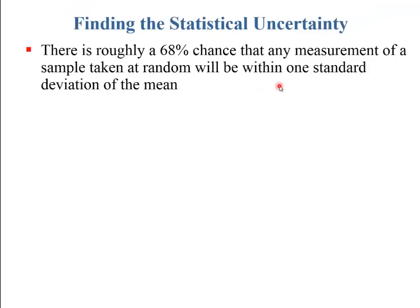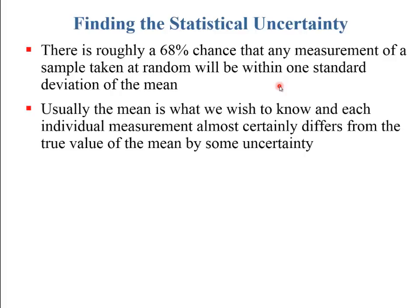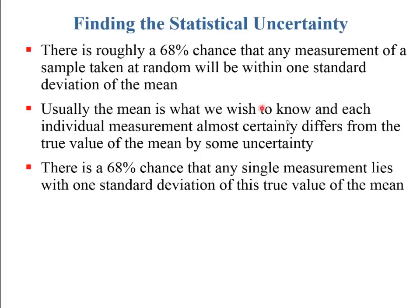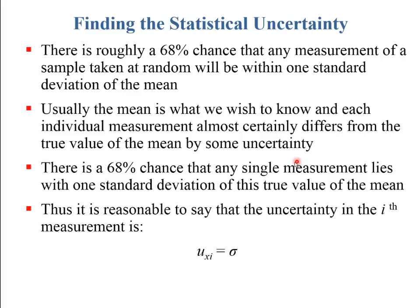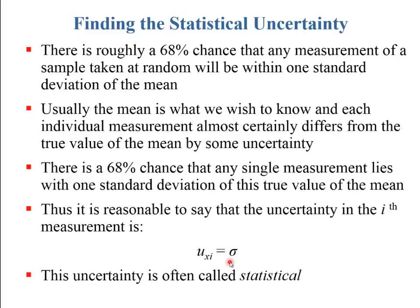There is roughly a 68% chance that any measurement taken at random will be within one standard deviation of the mean. Usually it's the mean we want to know, and each individual measurement will differ from it. For a particular measurement, the uncertainty in that measurement equals the standard deviation — this is often called a statistical uncertainty.